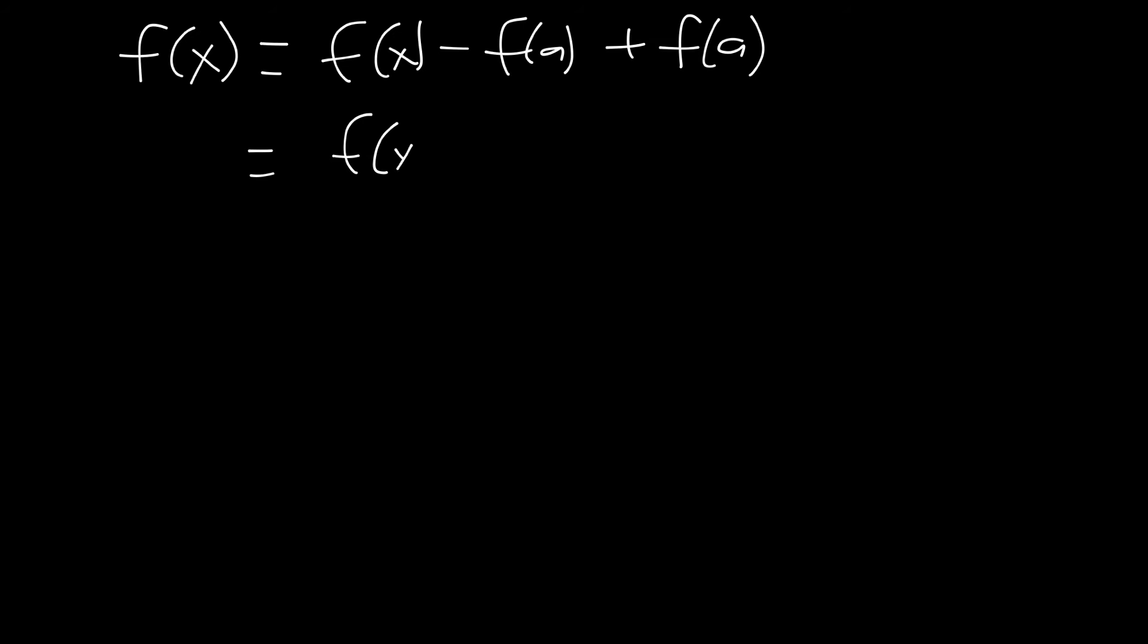Then what we'll do is we will take the first portion here, f of x minus f of a. We will divide by x minus a and we will times by x minus a still having plus f of a at the end. So this is still equal to f of x.